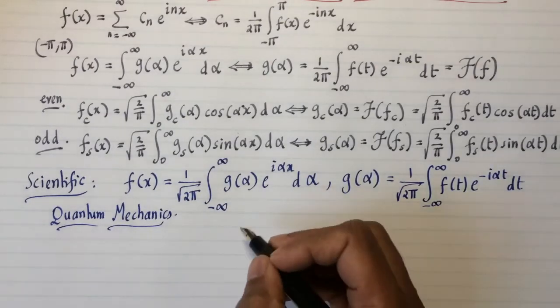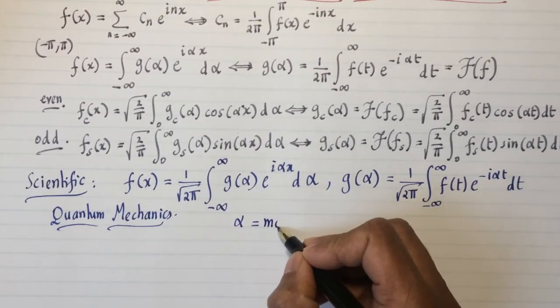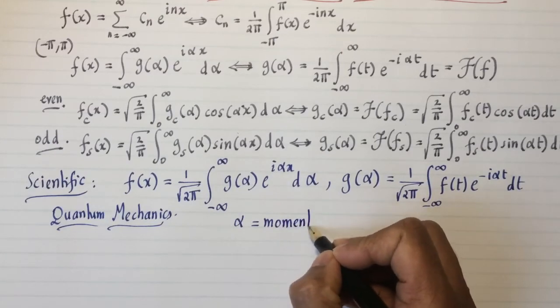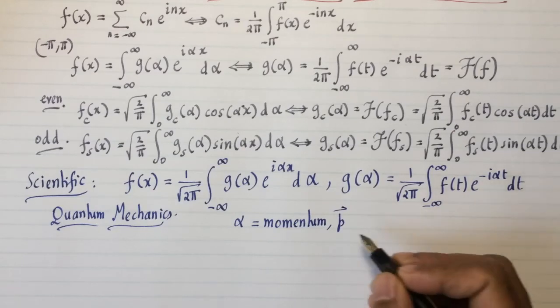Here's a little secret. Alpha in quantum mechanics is momentum, momentum p. Momentum is a vector.